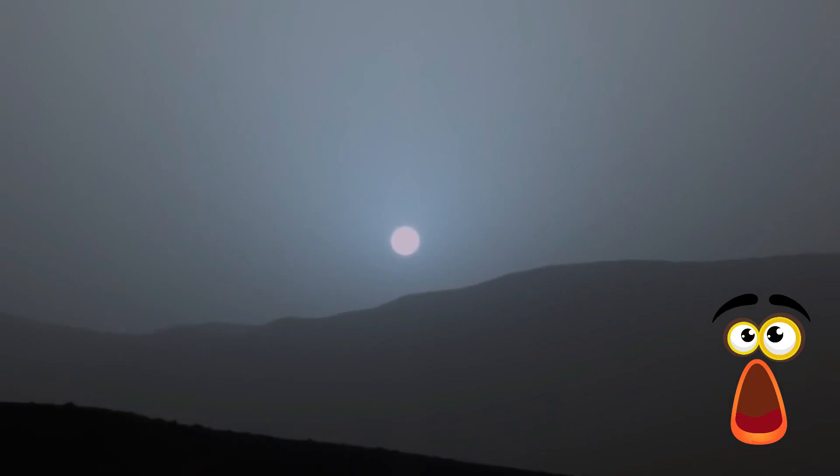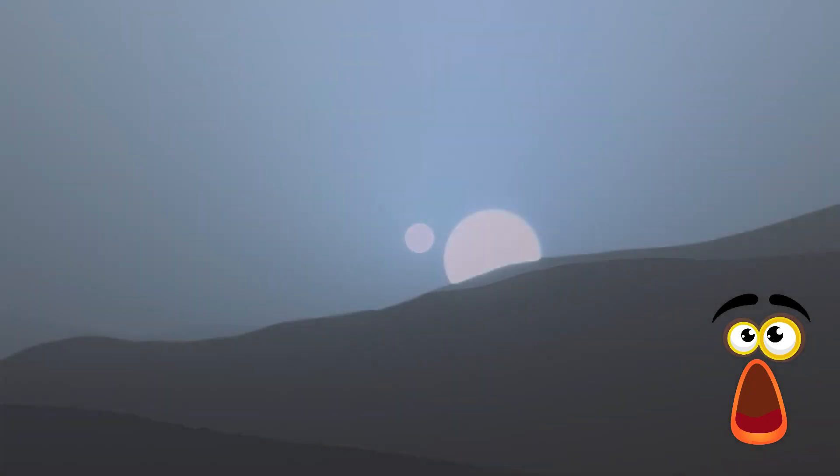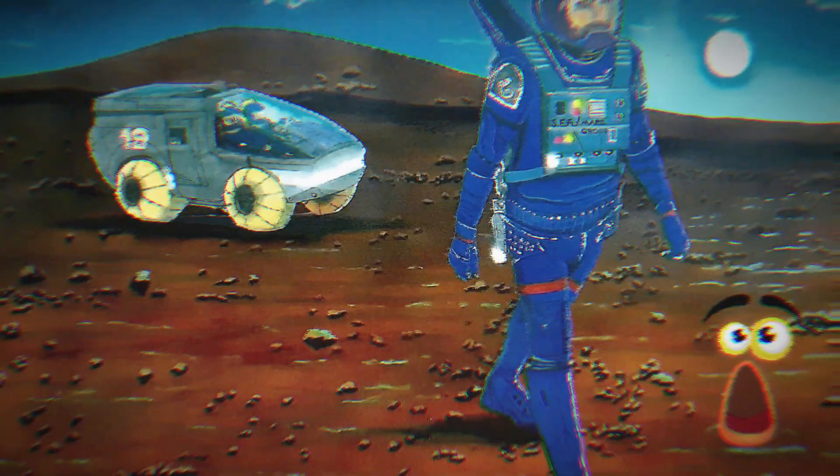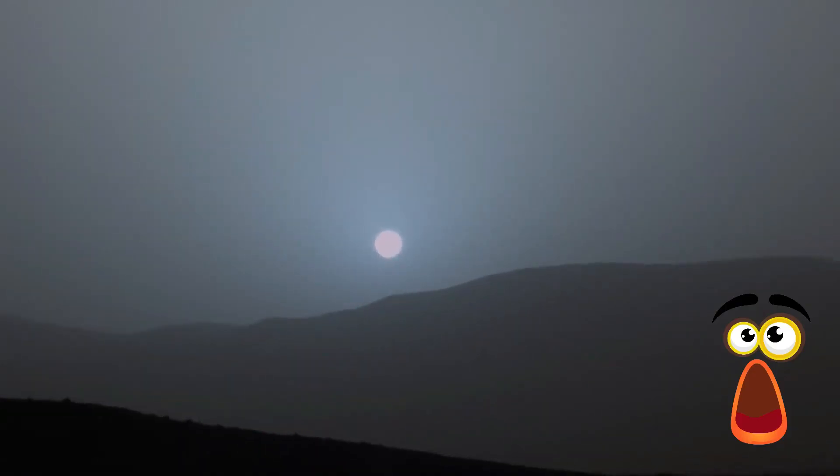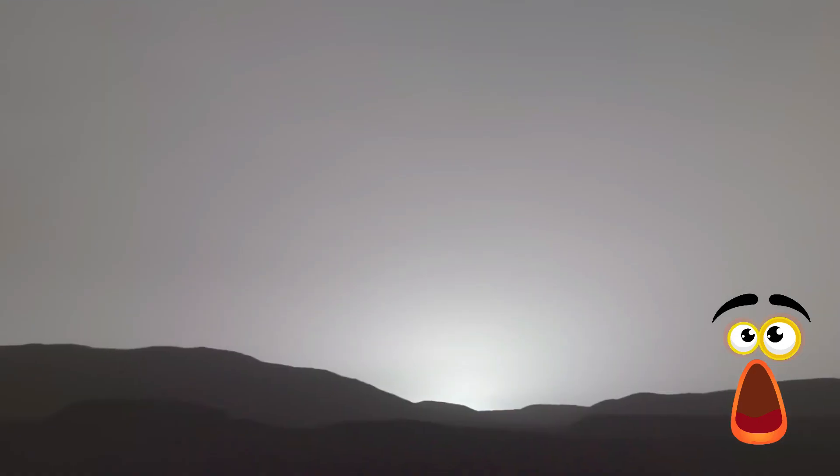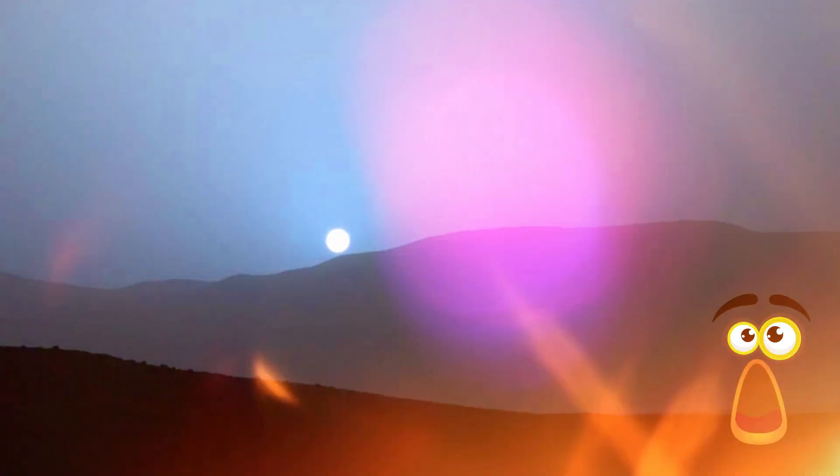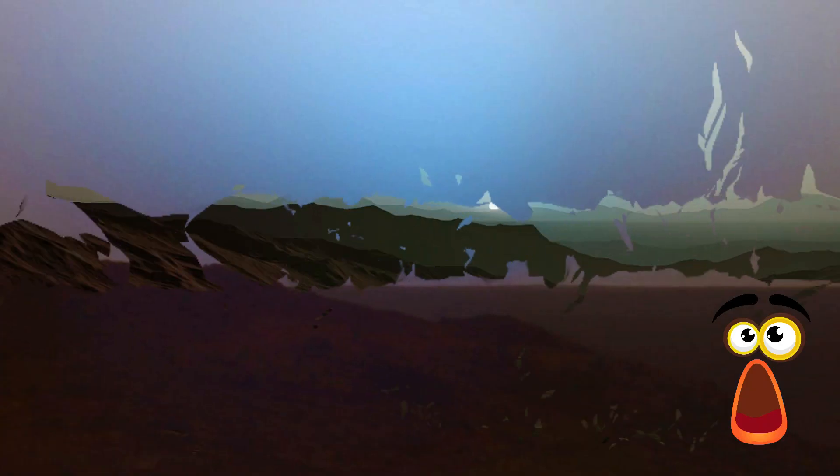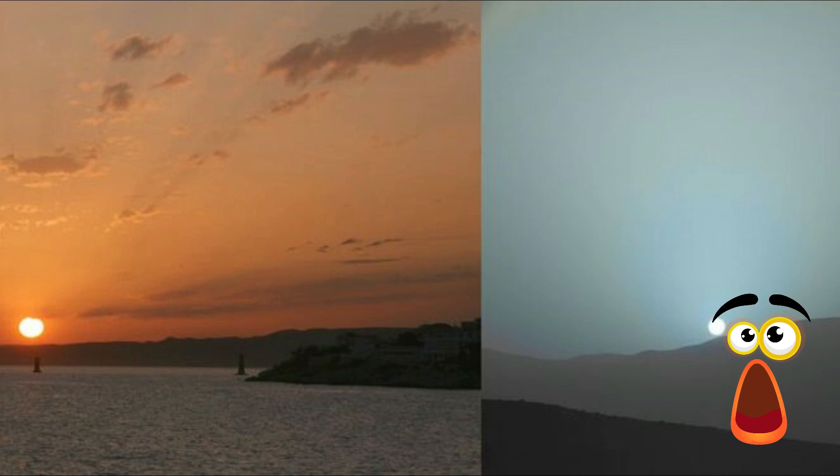Dust particles dispersed in the atmosphere are another element that contributes to the blue colors of Martian sunsets. With regular dust storms that have the potential to engulf the planet, Mars is renowned for its dusty climate. As the sun starts to set on Mars, its light must travel a longer distance through the atmosphere of the planet. Rayleigh scattering and dust particles combine to produce a stunning display of blue colors that cover the Martian skies.